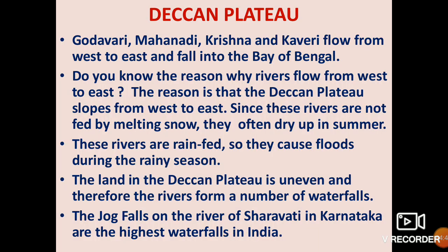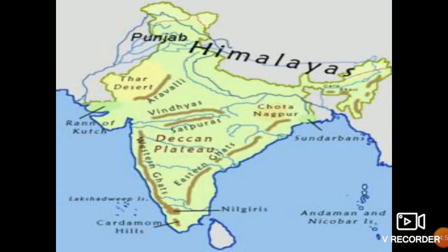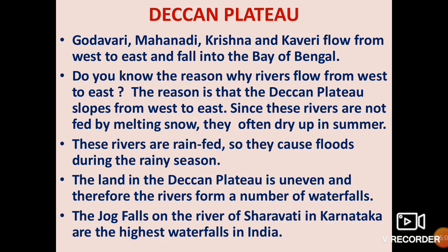The rivers of the Deccan Plateau — Godavari, Mahanadi, Krishna, and Kaveri — flow from west to east and fall into the Bay of Bengal. The reason is that the Deccan Plateau also slopes from west to east.